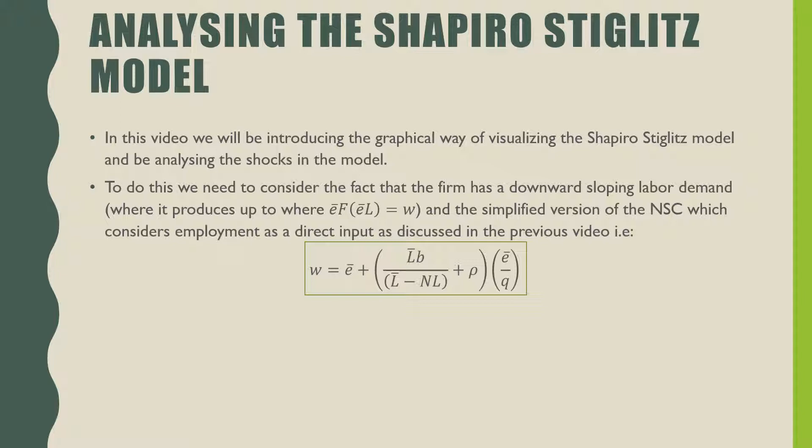To do this we need to consider the fact that a firm has a downward sloping labor demand curve where it produces where its marginal product of labor is equal to the wage. We also have to consider the simplified version of our no shirking condition which considers employment as a direct input.